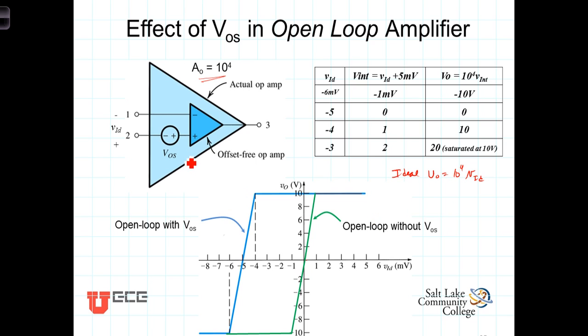But when we model the amplifier with the offset voltage, we get something quite different. In our model here, we will apply the differential voltage VID, which of course is VID equal to V2 minus V1. But the amplifier itself will be acting on what we're going to call V internal. And so the output of the actual amplifier will be equal to the open loop gain 10 to the 4th times the internal voltage here. And of course, that internal voltage is going to be affected by this offset voltage. And we're going to look at it for a number of different values of VID.